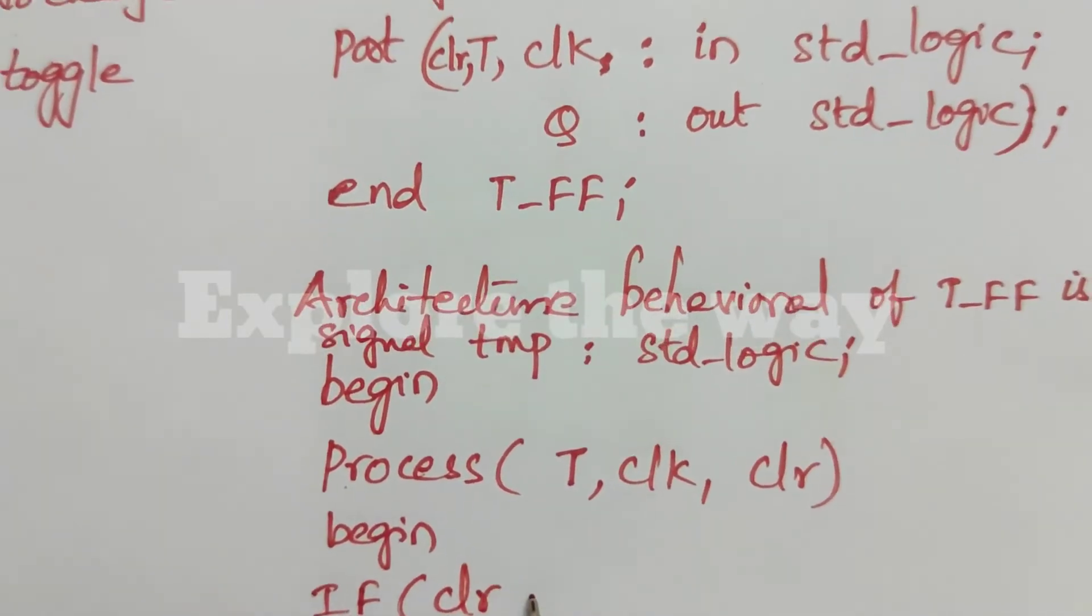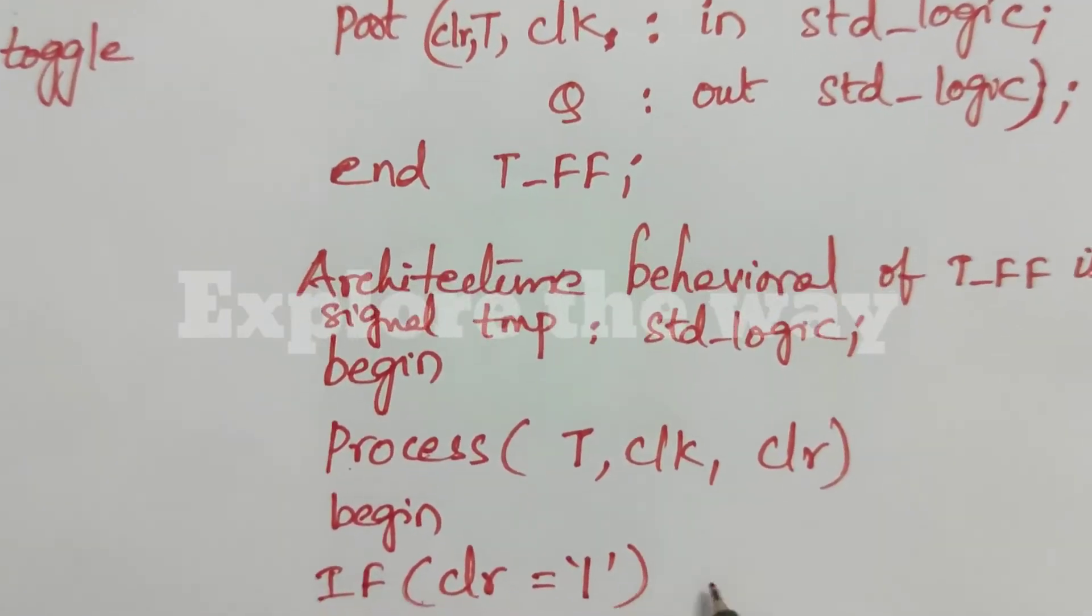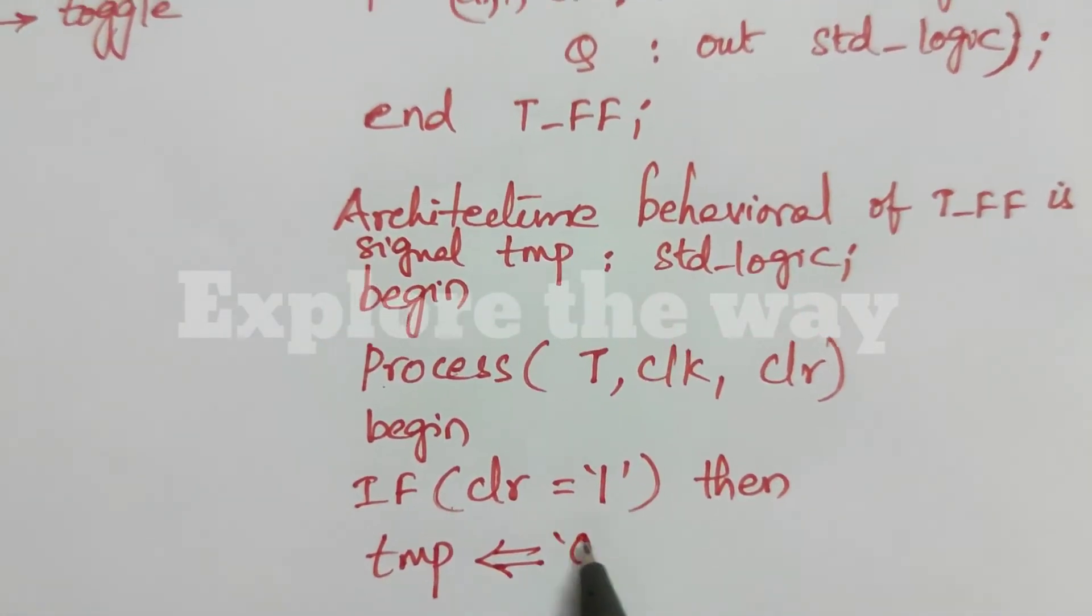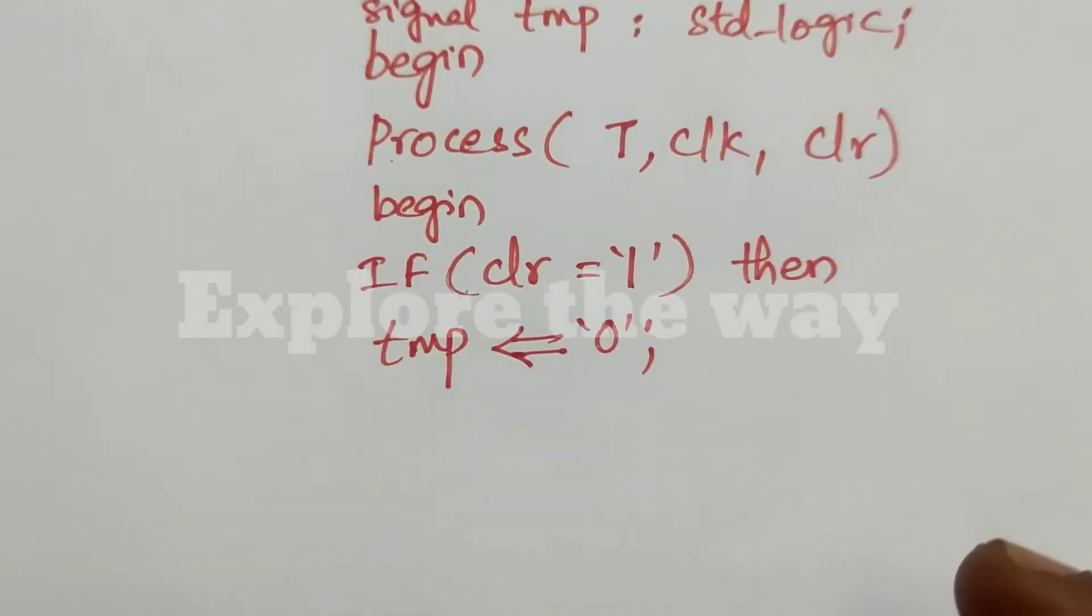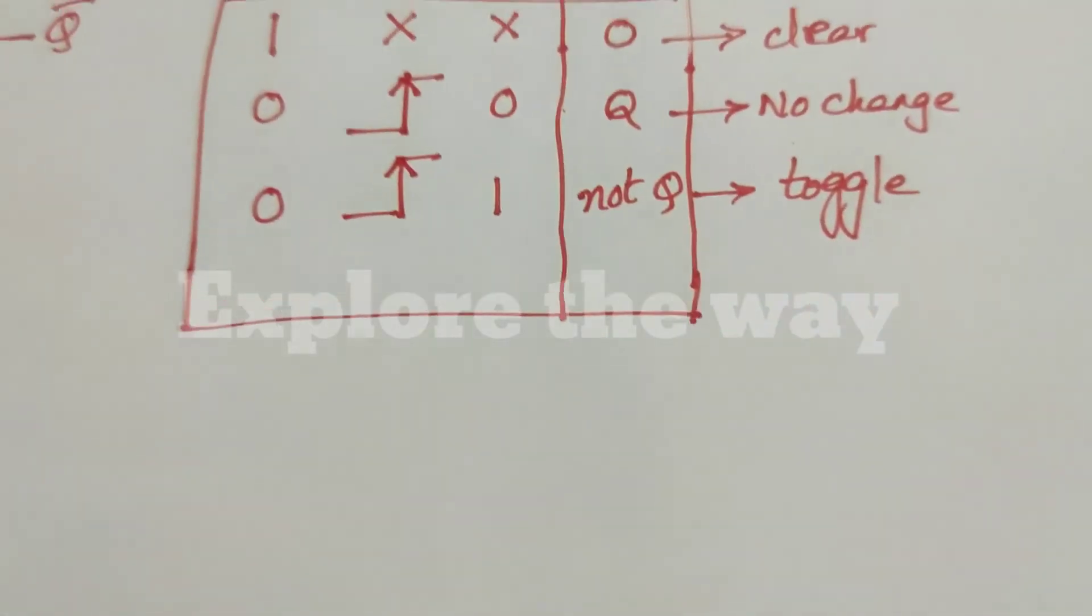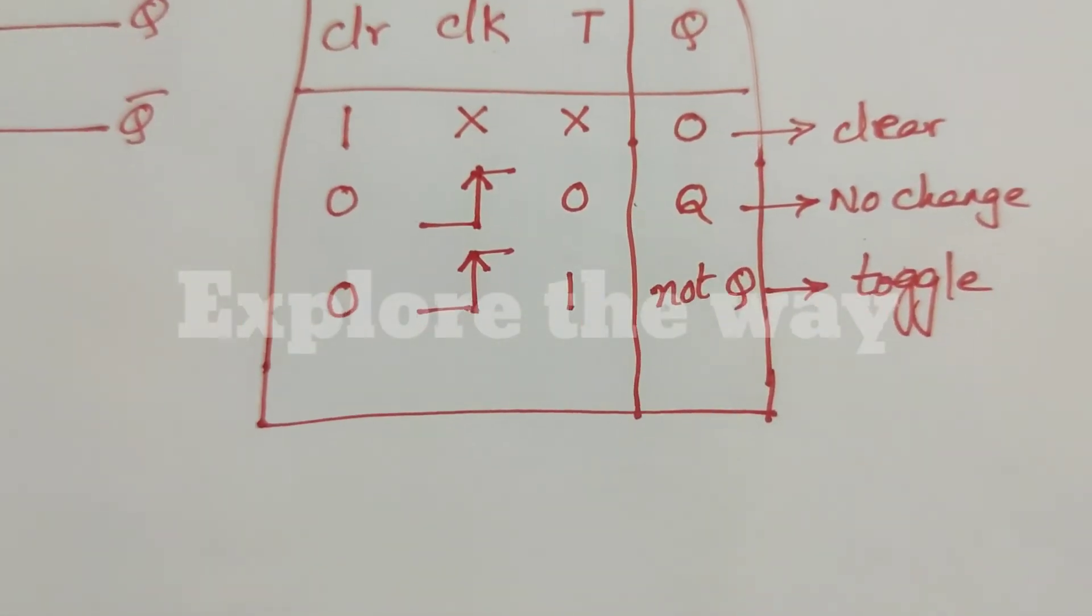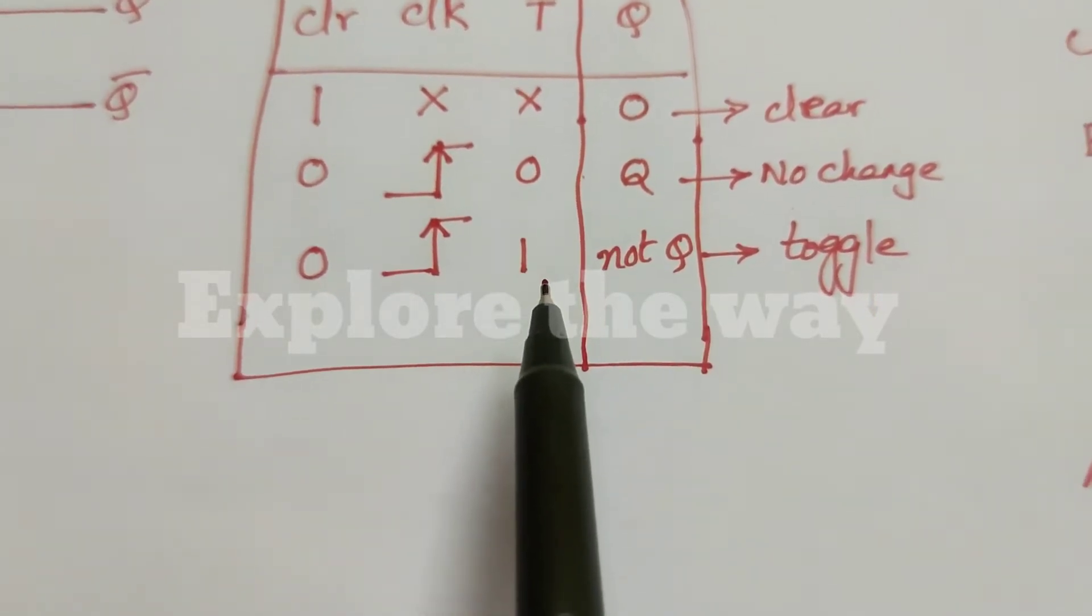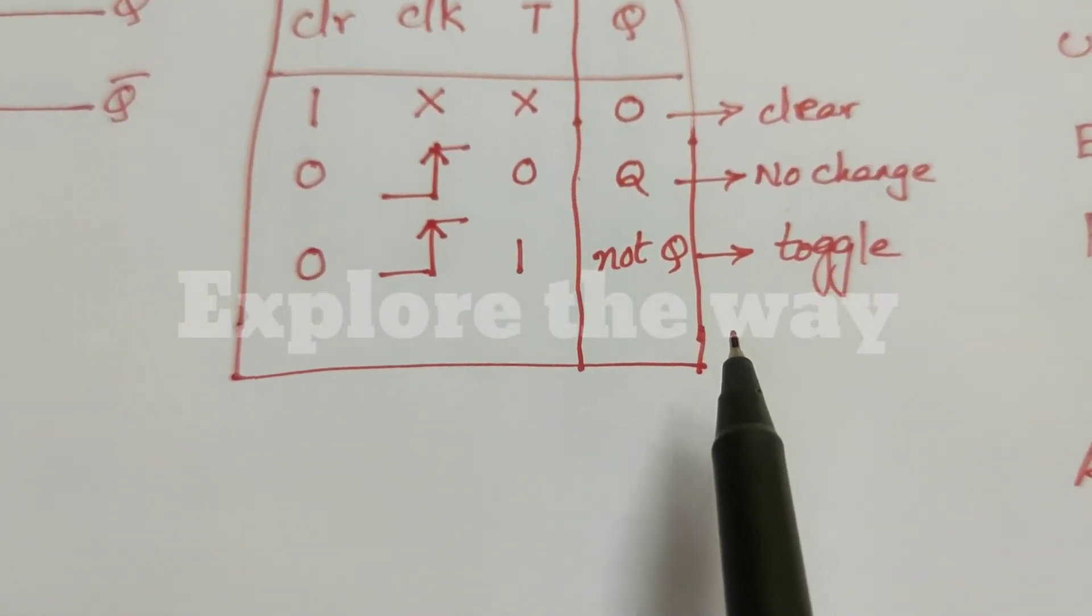If clear is equal to one, then temp is assigned zero. That's the first one. Next, if clear is zero, at the positive edge of clock, based on T, output will be assigned.